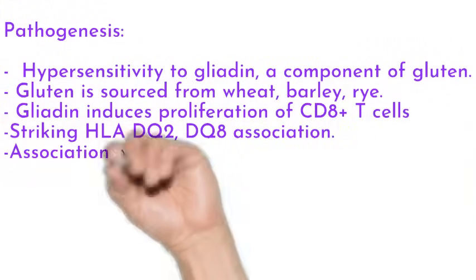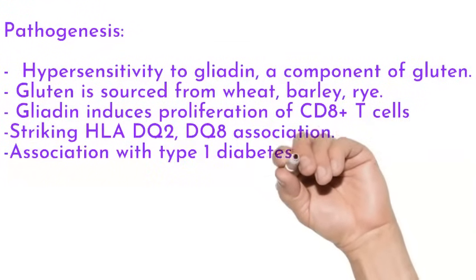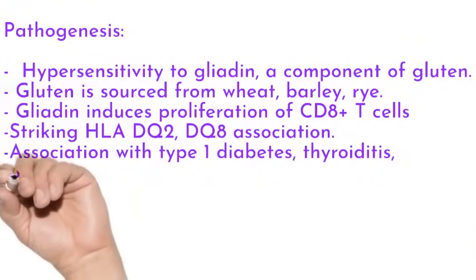Striking association with HLA-DQ2 and DQ8 is found, and association with diabetes, Sjögren syndrome, and thyroiditis is also seen. The diagnostic features are commonly seen in the second part of the duodenum and jejunum.